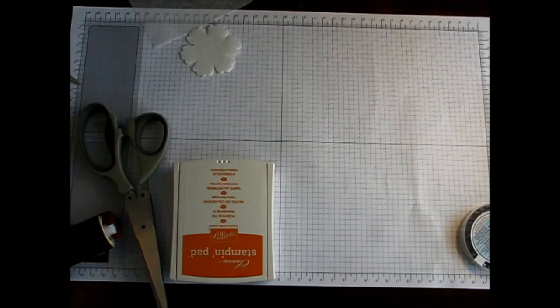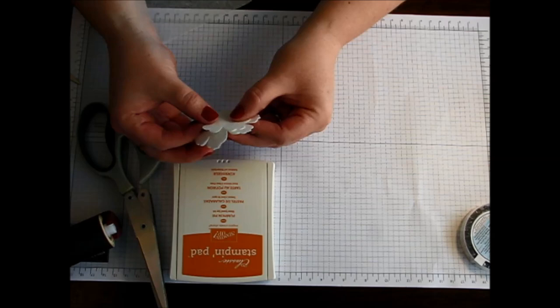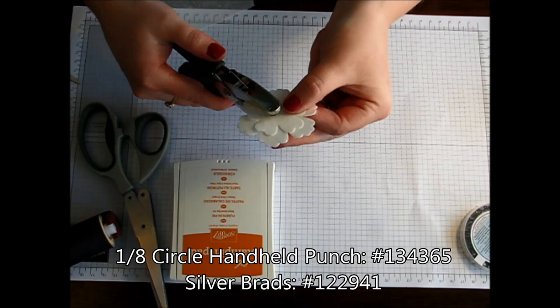Now we can set that aside as well as our punches. I'm just going to lay all eight of my punches on top of each other and take my handheld punch and punch a little circle in the center.